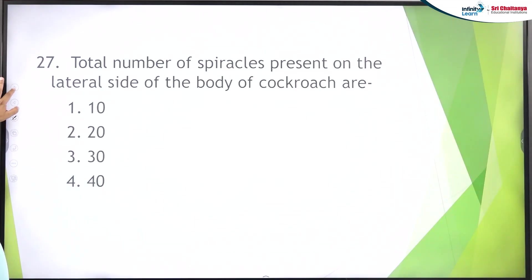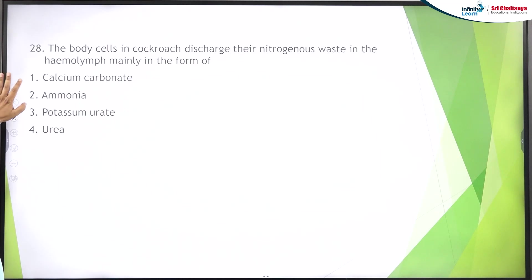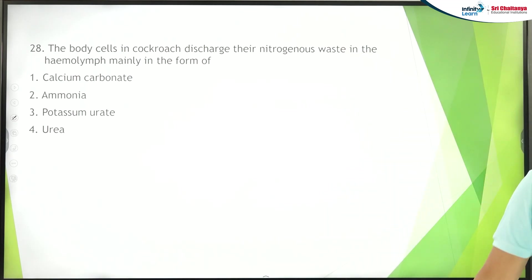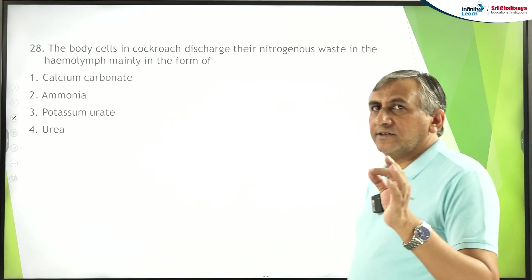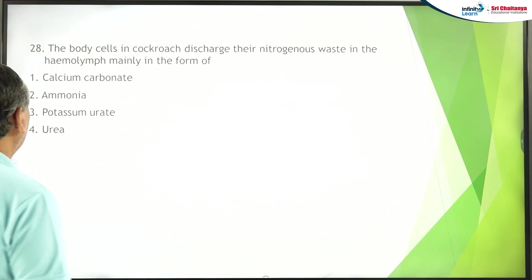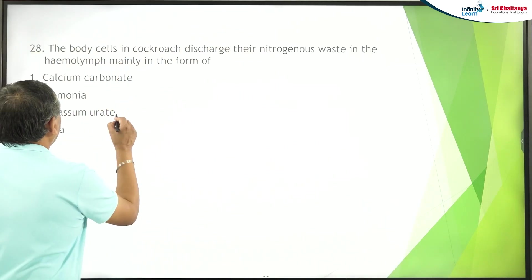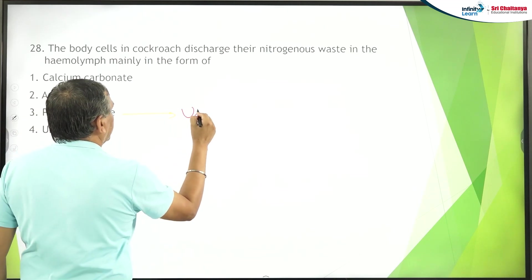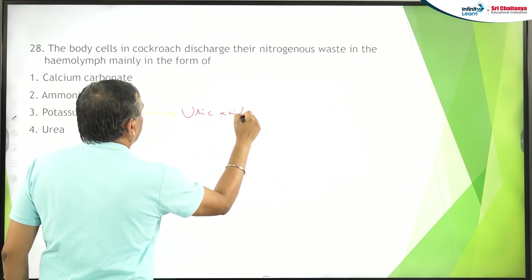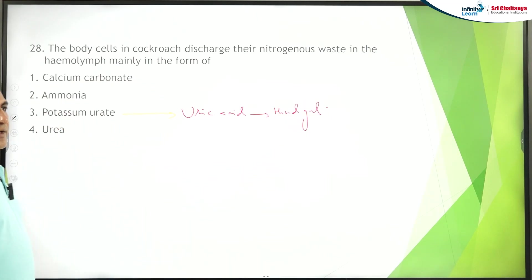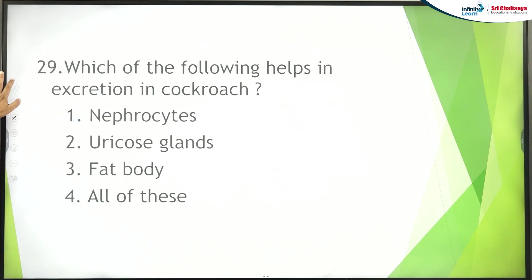The examiner is very clever here. The question asks: the body cells in cockroach discharge their nitrogenous waste in hemolymph in the form of — answer: potassium urate. Malpighian tubules convert this potassium urate into uric acid, and the uric acid comes out through the hindgut.